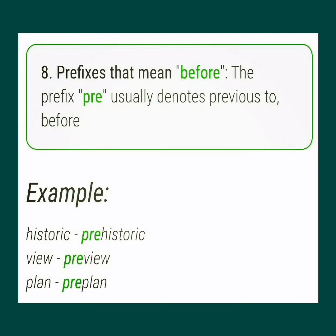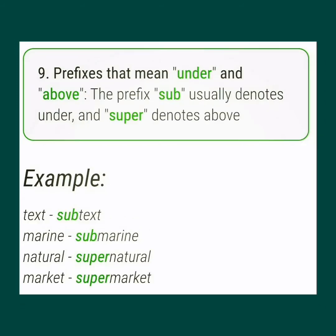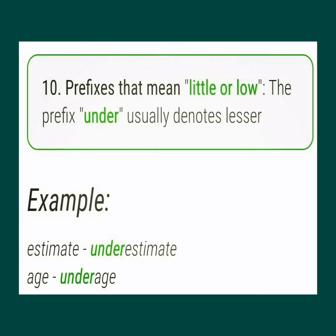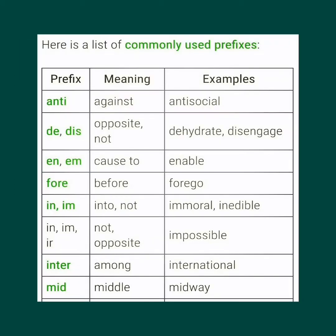Prefixes that mean 'before': the prefix pre- usually denotes previous to or before. Examples: historic → prehistoric, view → preview, plan → pre-plan. Prefixes that mean 'under' and 'above': the prefix sub- usually denotes under, and super- denotes above. Examples: text → subtext, marine → submarine, natural → supernatural, market → supermarket. Prefixes that mean 'little or low': the prefix under- usually denotes lesser. Examples: estimate → underestimate, age → underage.